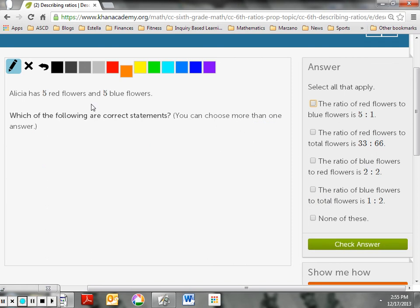Okay, let's try another one. Alicia has 5 red flowers and 5 blue flowers. Which of the following are correct statements. Okay, so I'm going to put red. I guess I should. Let's do that in red. Okay, so we have, there we go. We have red is 5, 2, let's go with blue. And we have 5 blue. Okay, now let's take a look here and find these.